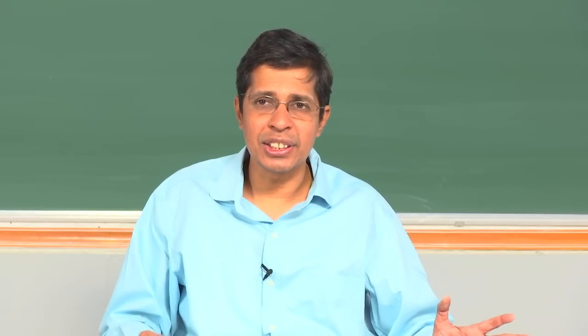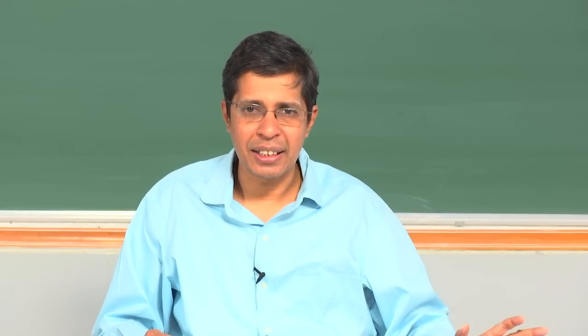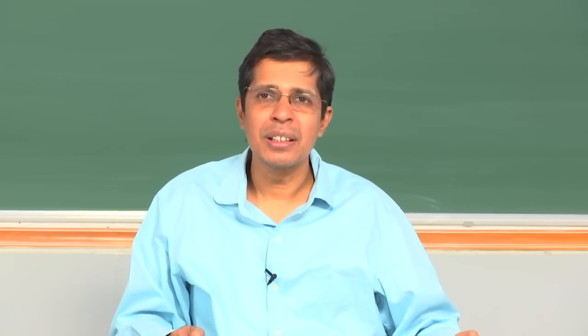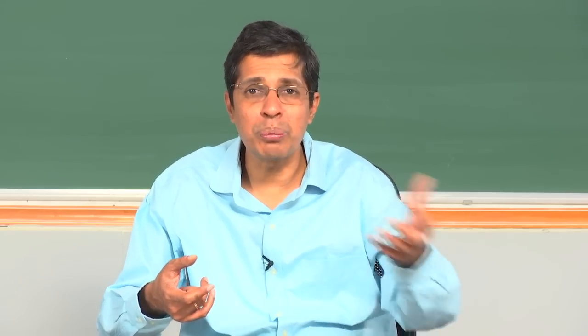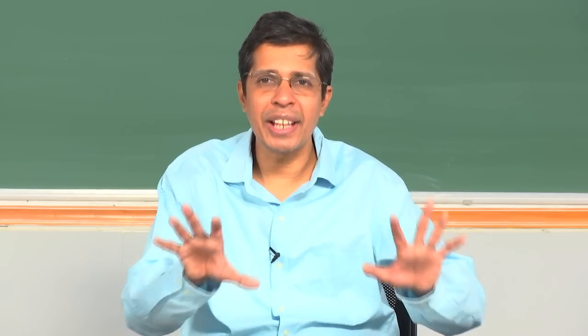When the buffer is full, I should not allow the producer to add an entry. When the buffer is empty, I should not allow the consumer to consume from it. The producer is a process, the consumer is another process — both working cooperatively and sharing a buffer resource. The discipline enforced is: the producer should not produce into a full buffer, and the consumer should not consume from an empty buffer. This is what we call synchronization.